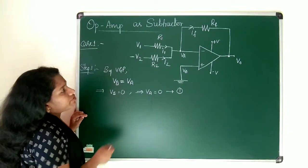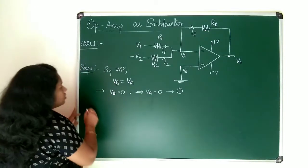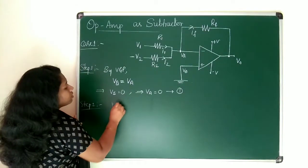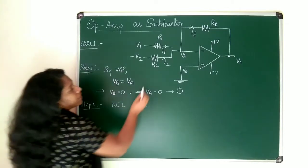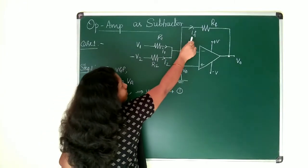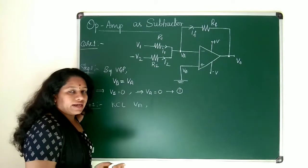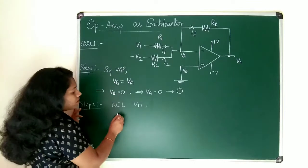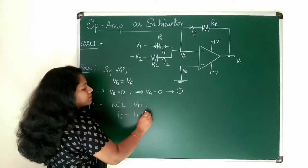Next I will be writing KCL. Apply KCL for this node. Second step is you need to apply KCL for the VA node. When you apply that what you will be reading? I1 is entering here and I2 is entering here and the current leaving is IF. What KCL says the current entering to the node is equal to current leaving the node. So based on that I can write IF is equal to I1 plus I2.